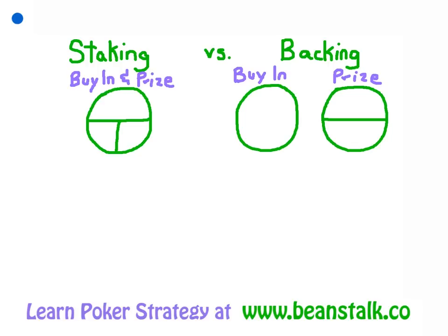Let's look at staking first. So let's say this pie chart is 100% of your action in a poker tournament, and you want to keep 50% for yourself — that's you, smiley face. But you're willing to sell 50% to stakers, and you find two people who are each willing to take 25%. Just like buying stock in a company, they've bought 25% of your winnings. Their profit is proportional to the percentage of the buy-in that they pay.